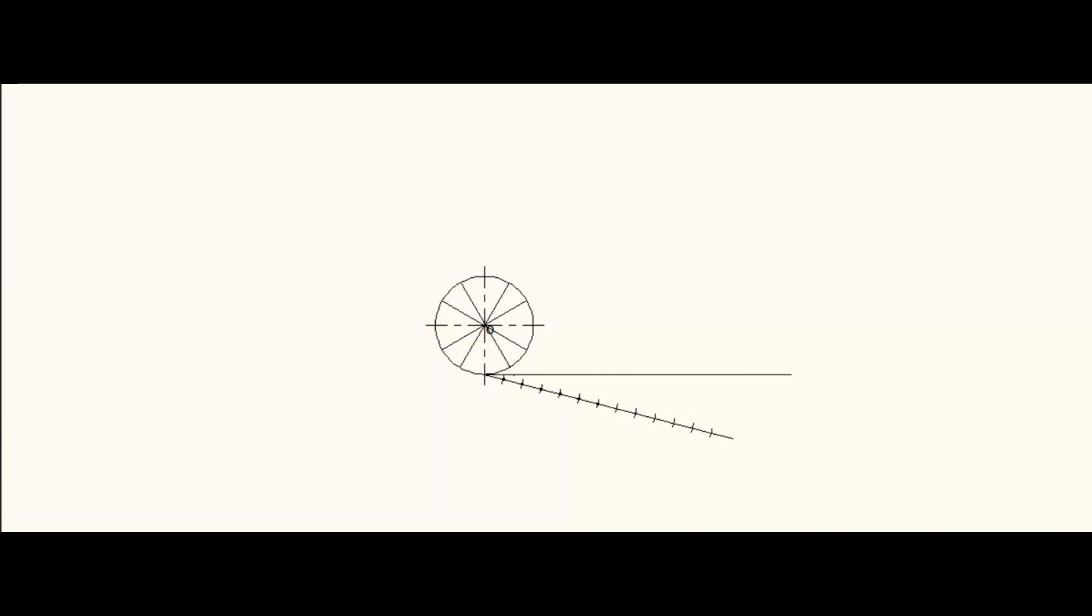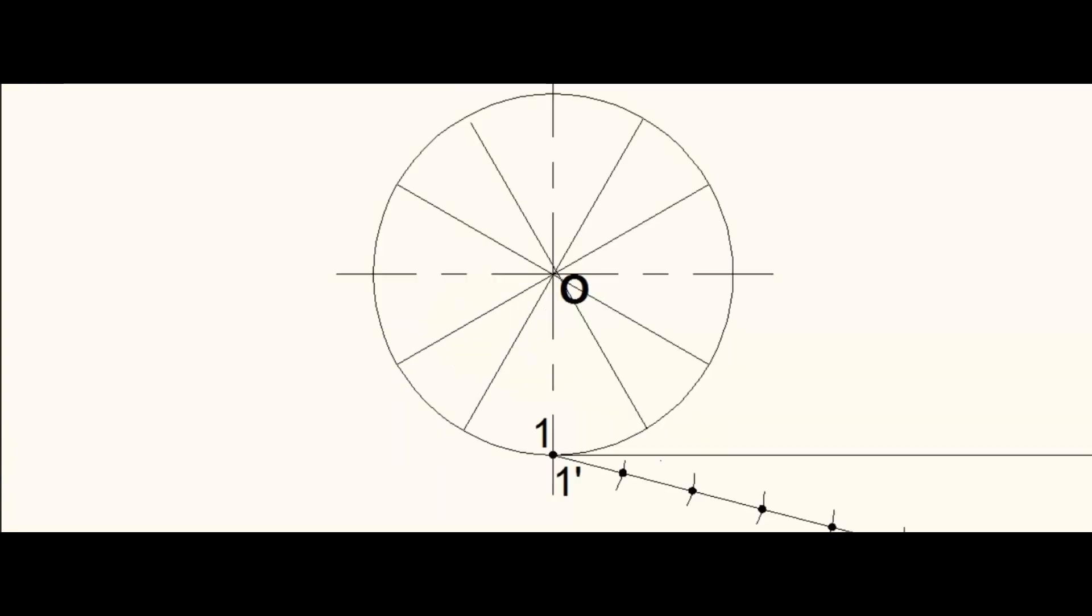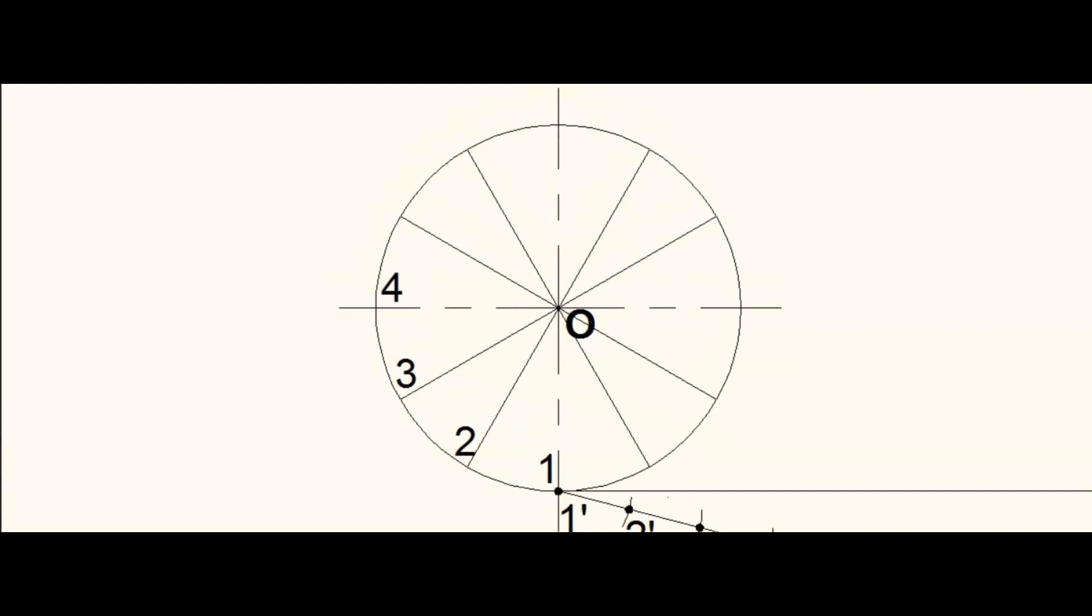Mark numbers on the divisional points of the circle. While numbering on the circle, it should be done in the clockwise direction.